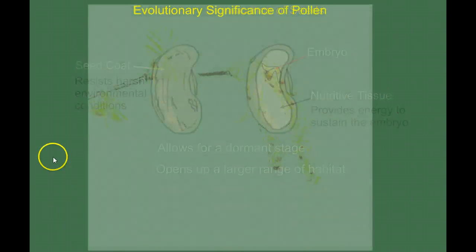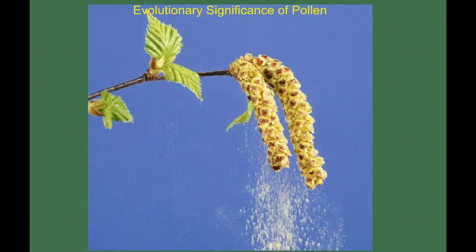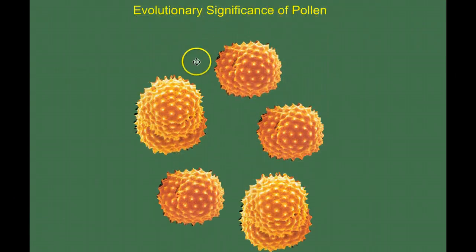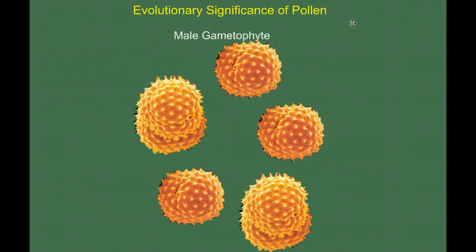Now let's discuss the significance of pollen. We all know what pollen is — some of us have pretty bad allergies to it. But what's the significance beyond giving us allergies? It turns out that pollen is the male gametophyte. We'll need to revisit our alternation of generations life cycles to understand what gametophyte means, and the next video will go into detail on seed plant life cycles.